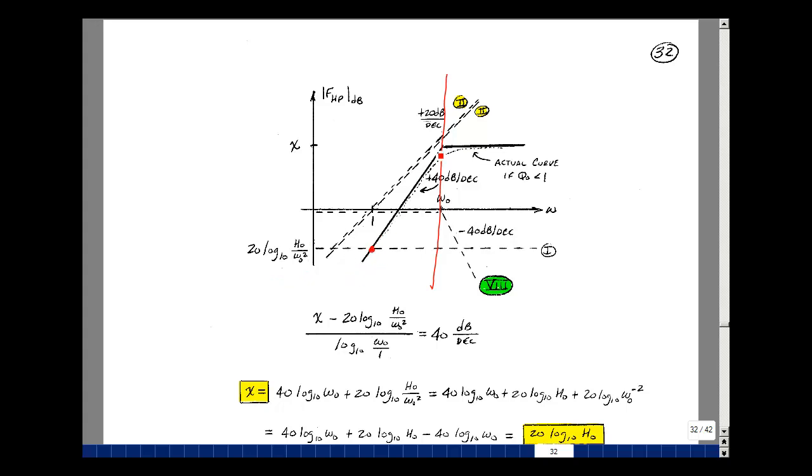Then we're going to increase at 40 dB per decade, and then we get to this next region. I have net slope of 20, plus 20, and then minus 40, so it levels out. Now the question is, where does it level out? Well I can use the fact that I know the slope, and I know two frequencies, frequency of one radian per second and the value of omega naught.